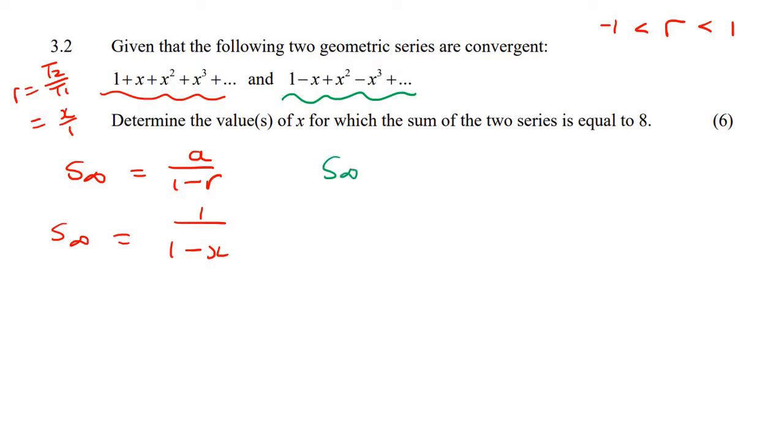Now let's go work out the sum to infinity of this one. So we go sum to infinity equals to a over 1 minus r, and so a is 1. Now your ratio for this one is term 2 divided by term 1, which is going to be term 2 is negative x, and term 1 is 1. So that's just going to be minus x. So we can put a minus x here, and that's going to end up becoming 1 over 1 plus x.